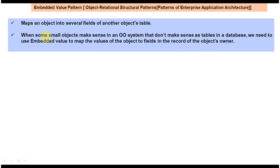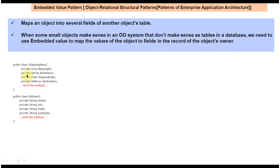We will see an example so you will understand these points. We will take two classes: one is ShippingItem and another is Address. Both are persistent classes. The ShippingItem class has shipping-related information like shipping ID, item name, shipping date, and the address where the item should be delivered. The Address class has fields like street, city, state, and postal code. ShippingItem and Address have a one-to-one relationship — one shipping item is delivered to a single address.